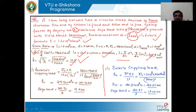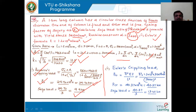Now let us find the Rankine's crippling load, which is sigma c into A divided by 1 plus alpha into (Le by k) whole squared. Sigma c is 560, area is 1963, alpha is 1 by 1600, Le is 3000 and k is 12.5. We will get the crippling load as 29.72 kilonewtons. Since the factor of safety is given, the safe load is obtained by dividing the crippling load 29.72 kilonewtons by 3, that is 9.9 kilonewtons. So according to Rankine's theory, the safe load is 9.9 kilonewtons.